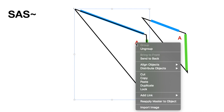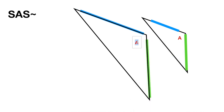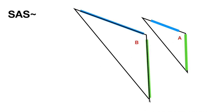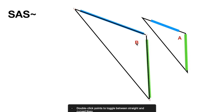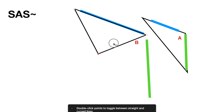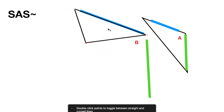Let's say, for example, that this angle A wasn't congruent to the original angle A — what would happen? If I change this to angle B, making it smaller and not as wide, look at this new triangle. It's not similar to this triangle. This triangle looks like it could be a right triangle or an acute triangle, while this one is an obtuse triangle.